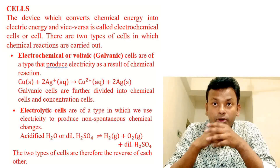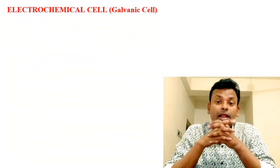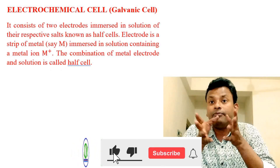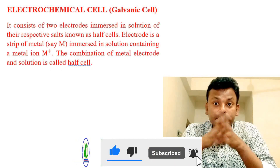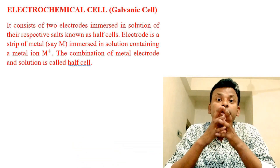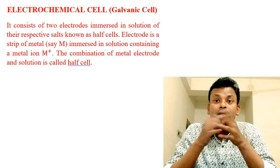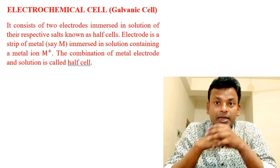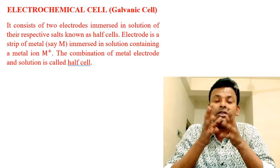An electrochemical or galvanic cell consists of two electrodes, each immersed in a solution of their respective salts, known as a half cell. An electrode is a strip of metal (M) immersed in a solution containing a metal ion (M⁺). The combination of the metal electrode and solution is called a half cell.